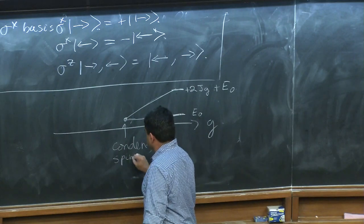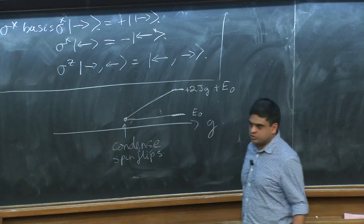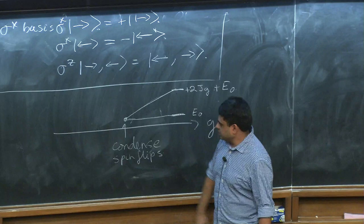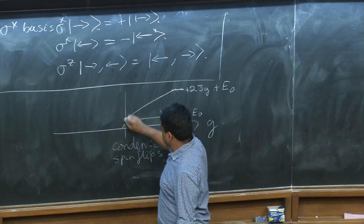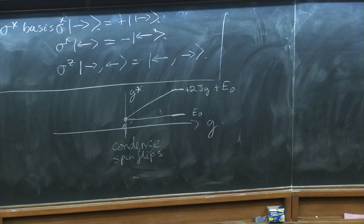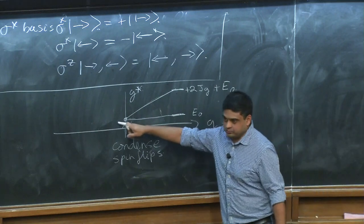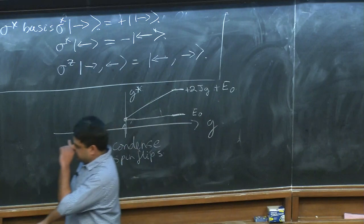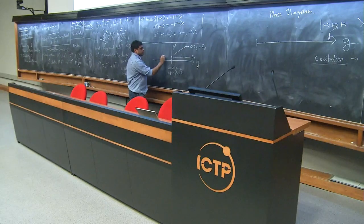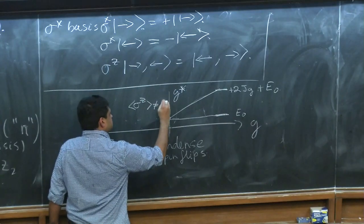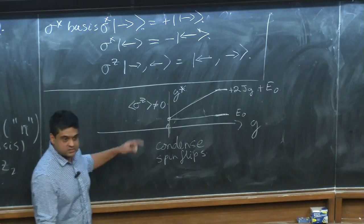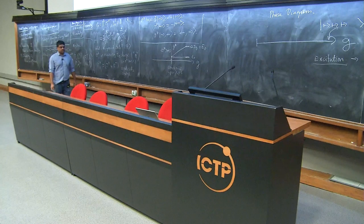At the point where the excitation energy goes to zero, it becomes favorable to insert Z2 charges into your ground state — we call that condensation. You condense these spin flips. You can think of it like Bose-Einstein condensation: you have these excitations, their density increases, and eventually they condense. There's a certain critical value of g at which this happens — the critical g at which these excitations come down and become degenerate with your ground state, changing the nature of this vacuum.